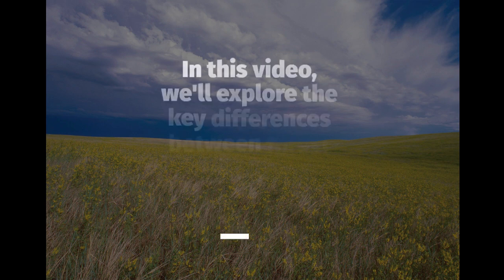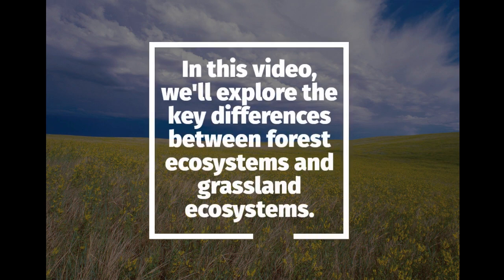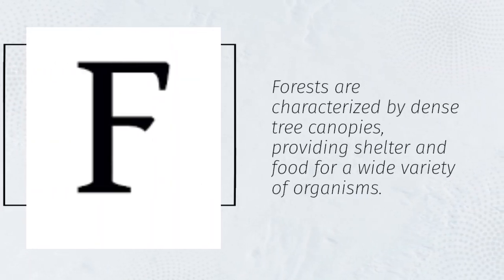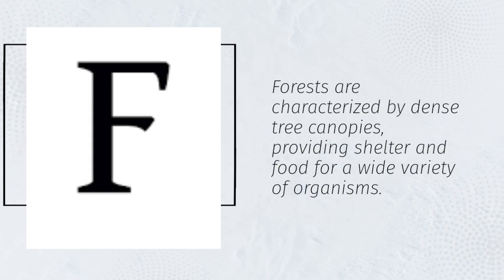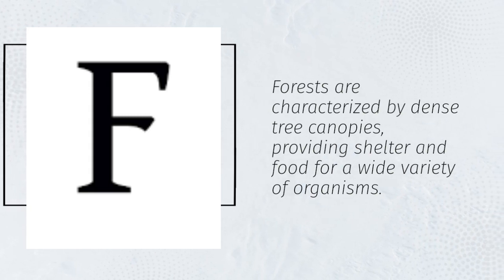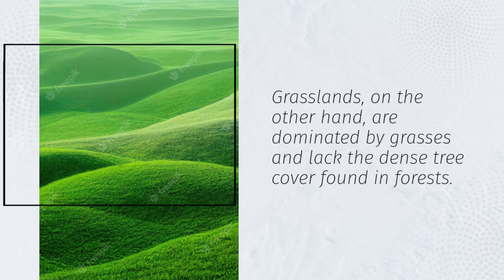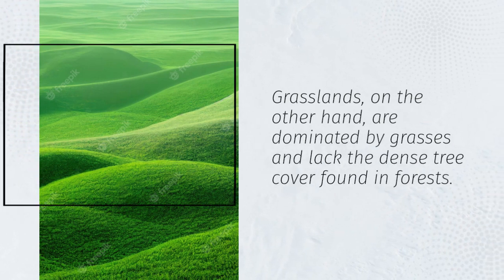In this video, we'll explore the key differences between forest ecosystems and grassland ecosystems. Forests are characterized by dense tree canopies, providing shelter and food for a wide variety of organisms. Grasslands, on the other hand, are dominated by grasses and lack the dense tree cover found in forests.